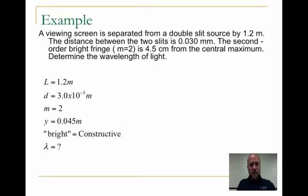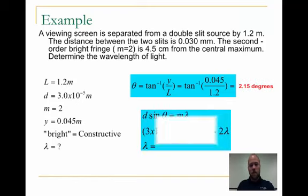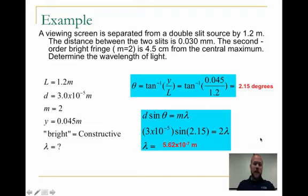The first thing, I'm given the l and the y, so why not find the angle? So the inverse tangent of this fraction gives us the angle, which is 2.15 degrees. So it's a very small angle, but when I go and then plug it into my equation to determine the wavelength of the light, I know the m, and I know the distance between the slits and I know the angle now. So all I do is plug it into the equation, and I get a wavelength of 5.62 times 10 to the negative 7 meters. Couldn't be much simpler than that.